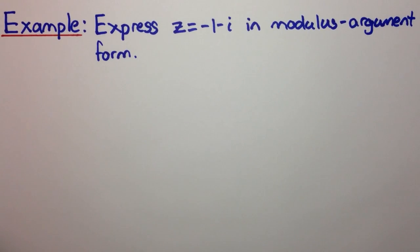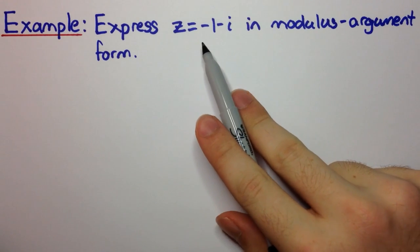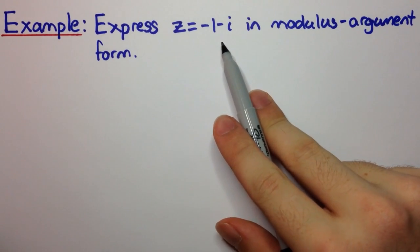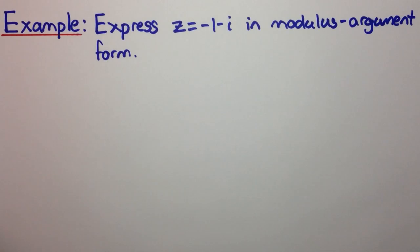This one is Cartesian to mod-arg form. The question says express z equals negative 1 minus i in modulus argument form. For modulus argument form, we need the modulus and the argument, as the name suggests.